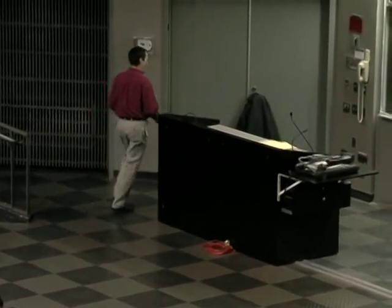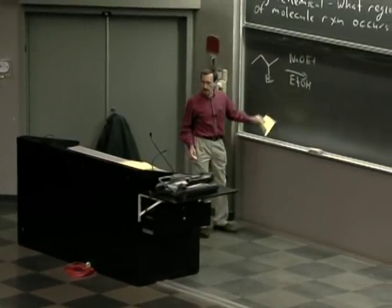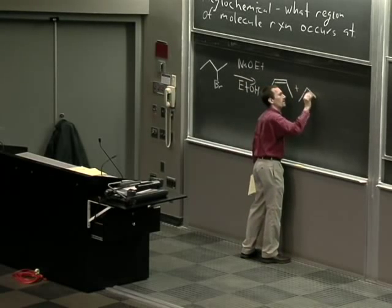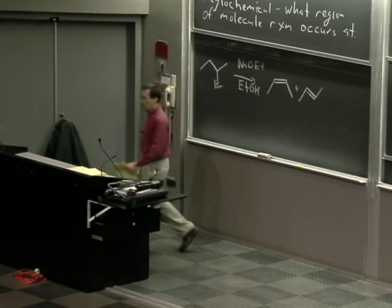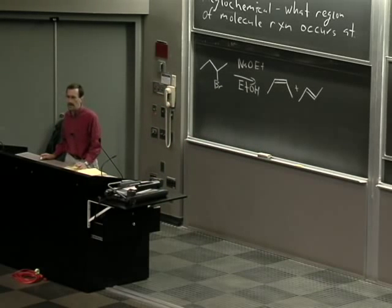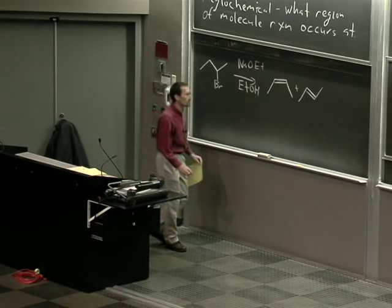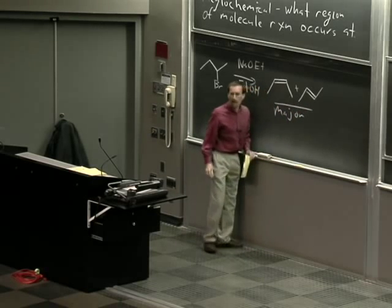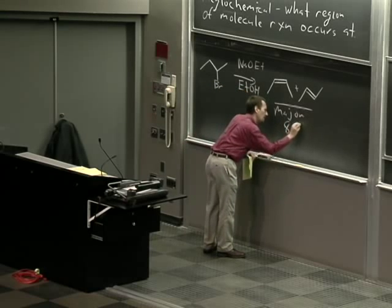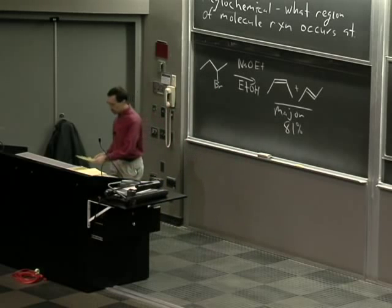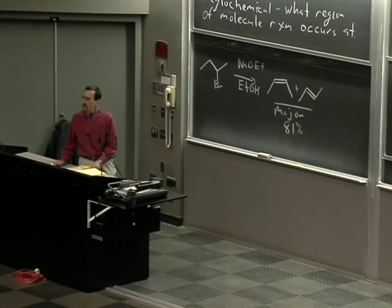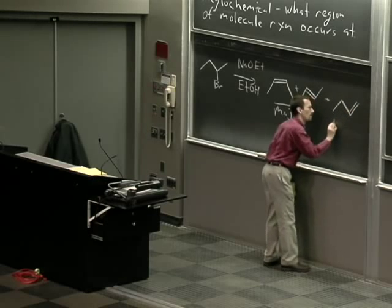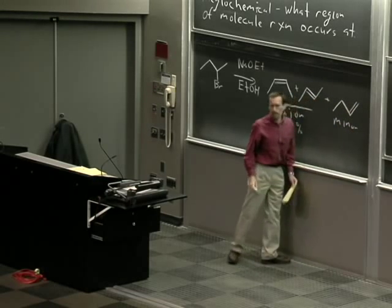We get a number of different products from this reaction. The alkene products that form are 2-butene, and we get two different stereoisomers: cis and trans-2-butene. These constitute the major product of the reaction — 81 percent of the alkene produced. We also get a minor product, another isomer of butene — 1-butene — and we get about 19 percent of it.